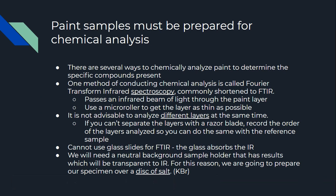You have to analyze one layer at a time — you can't analyze different layers simultaneously. If you can't separate the layers with a razor blade, you're going to want to record the order of the layers analyzed so you can do the same with a reference sample when you go to match it. With FTIR, you can't use glass slides because the glass will absorb the infrared radiation. You need a neutral background sample holder that is transparent to infrared radiation, so they use a salt disk — usually potassium bromide — to prepare the sample on.